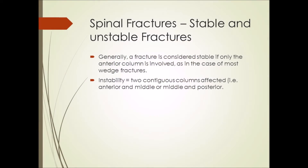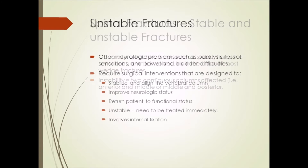Generally, a fracture is considered stable if only the anterior column is involved, as in the case of most wedge fractures. Instability occurs when injuries affect two contiguous columns — that is, the anterior and middle column, or the middle and posterior column.